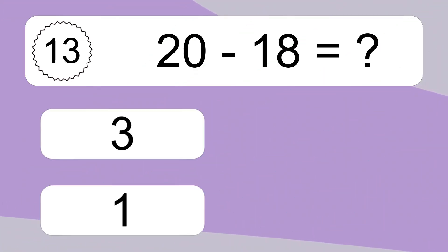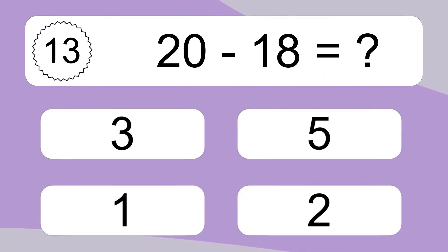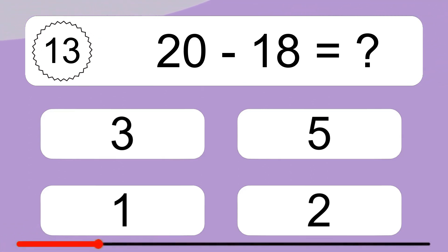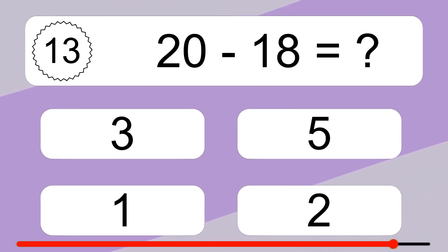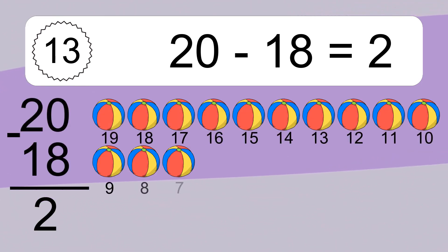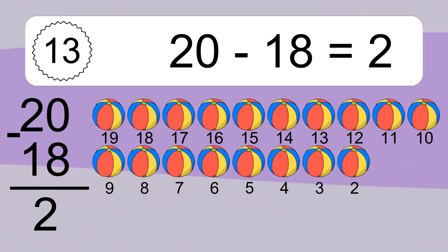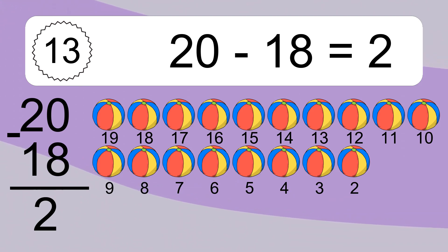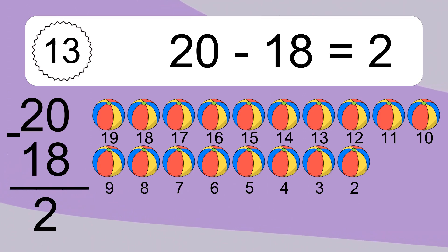20 minus 18 equals what? 20 minus 18 equals 2.